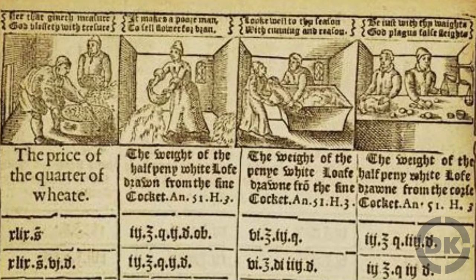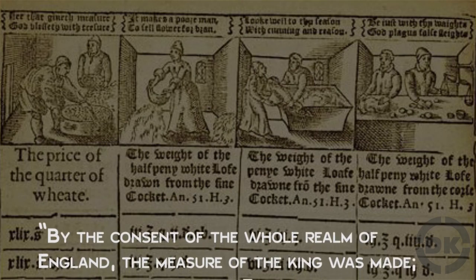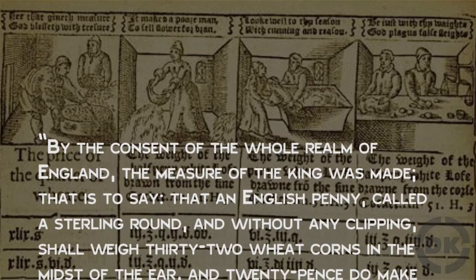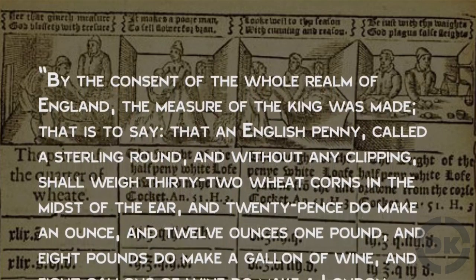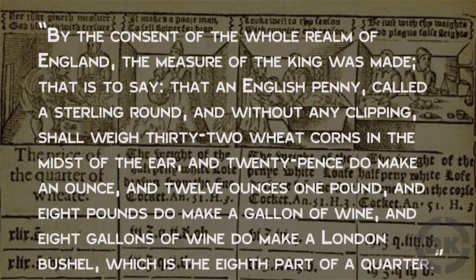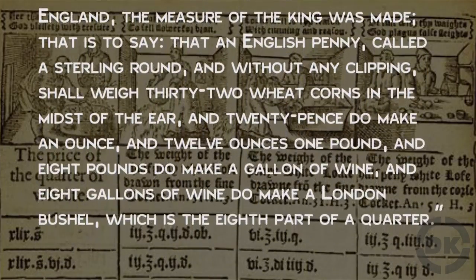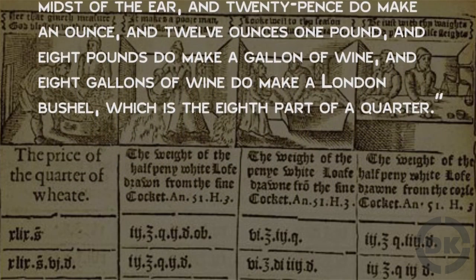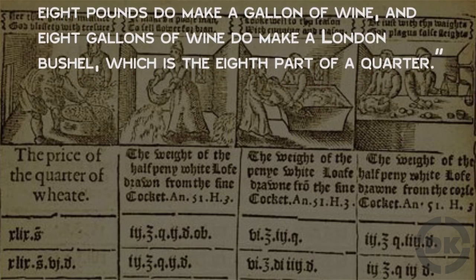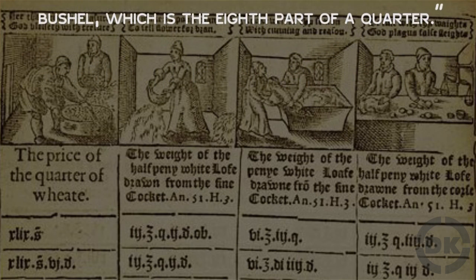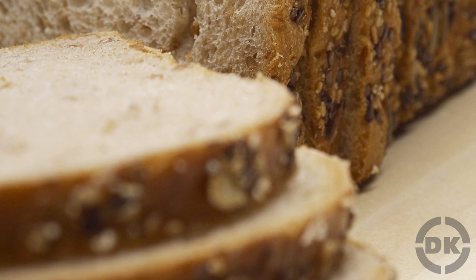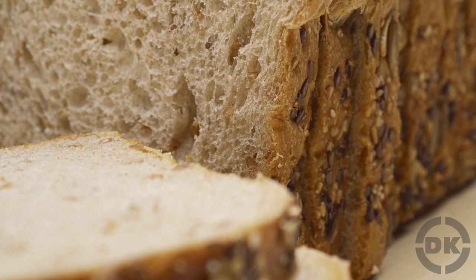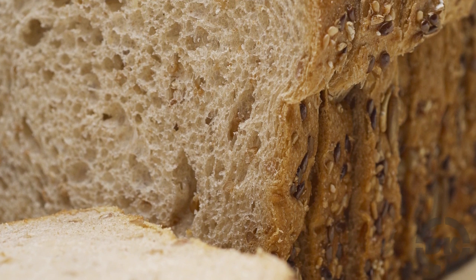Specifically it stated: 'By the consent of the whole realm of England, the measure of the king was made. That is to say, that an English penny, called a sterling round and without any clipping, shall weigh thirty-two wheat corns in the midst of the ear, and twenty pence do make an ounce, and twelve ounces one pound, and eight pounds do make a gallon of wine, and eight gallons of wine do make a London bushel, which is the eighth part of a quarter.' So basically, in terms of bread, it was setting the relationship between the price of wheat and what the subsequent price of a loaf of bread from a certain quantity of wheat should be.